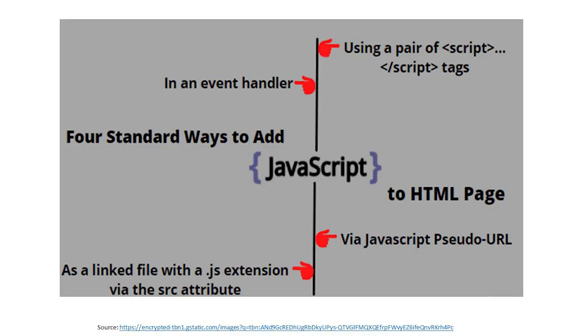So we can have three ways of inserting JavaScript. The diagram here elaborates four standard ways to add JavaScript, including using an event handler and an HTML page via JavaScript pseudo URL.